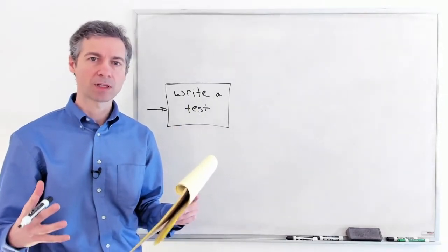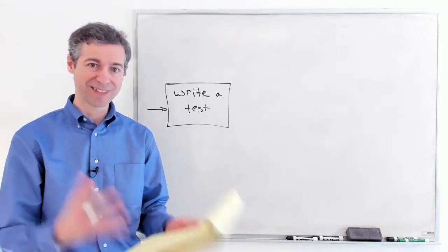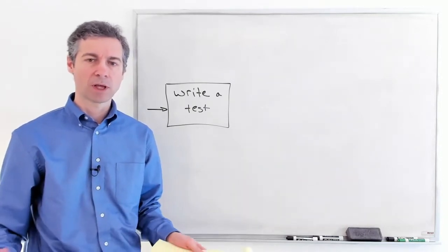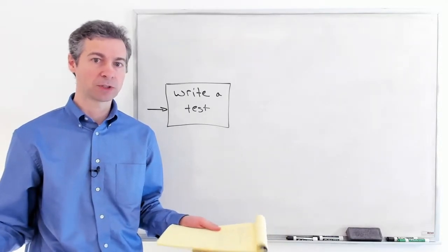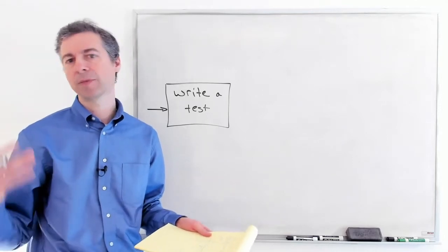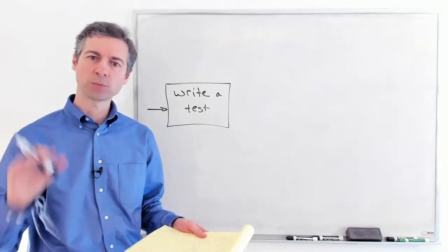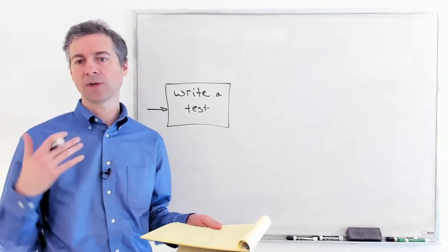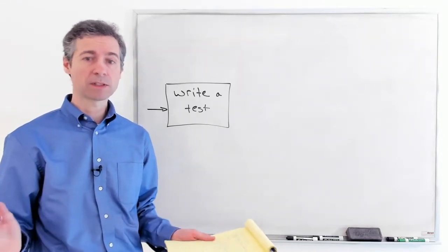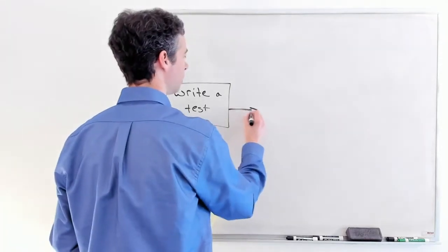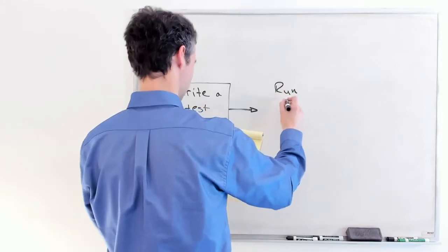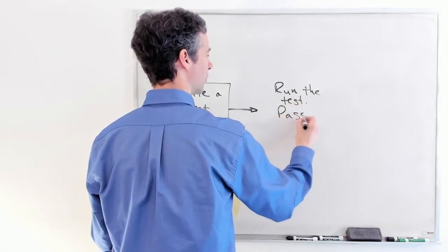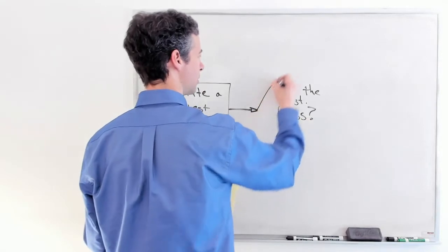The idea is you're going to express what you want your software to do in the test. You arrange, then act, then assert — and you haven't written the actual functioning software yet. From your understanding of how the software should work, you write a simple test. You pick something like: 'if I give it this input, it should return that output.' Then you run the test.